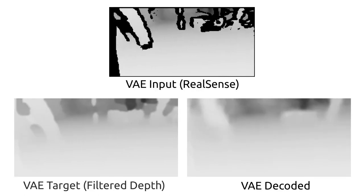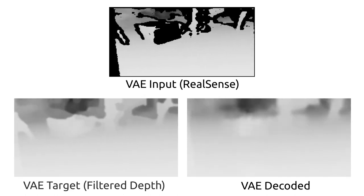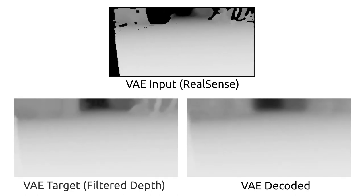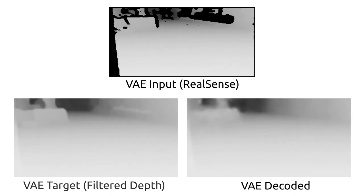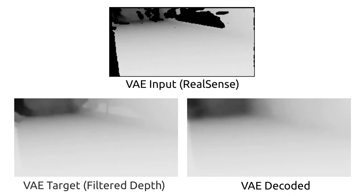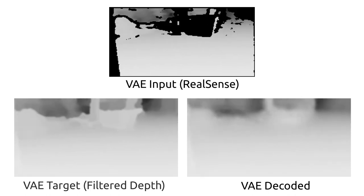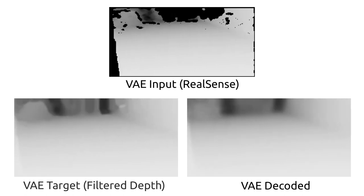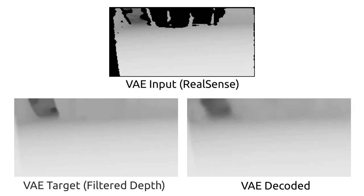The raw depth images obtained from the RealSense are noisy, as can be seen in the top frame. To filter the images, but also to overcome the reality gap between simulated and real images, we incorporate an additional image processing step which removes noise and reduces the level of detail of objects. The variational autoencoder is trained to carry out this processing step, as can be seen in the bottom right frame.